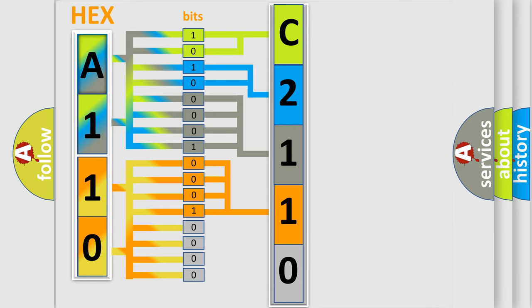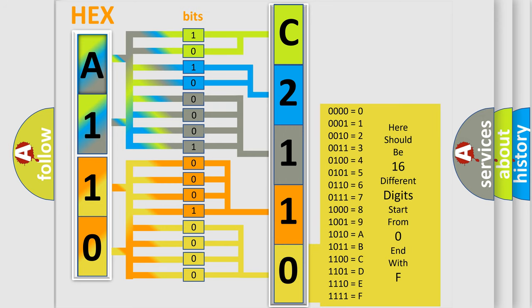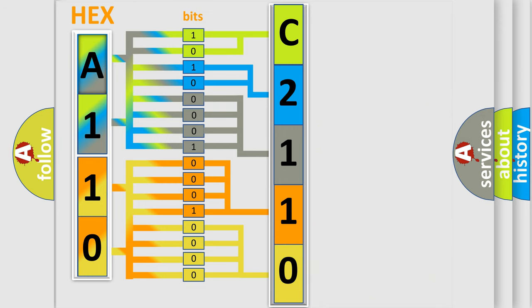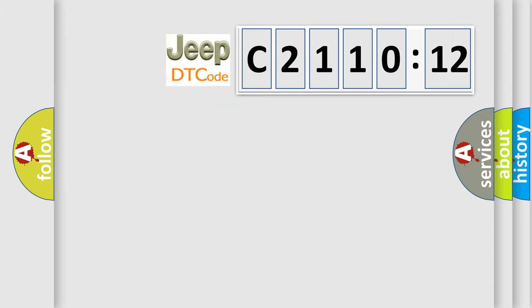A single byte conceals 256 possible combinations. We now know in what way the diagnostic tool translates the received information into a more comprehensible format.